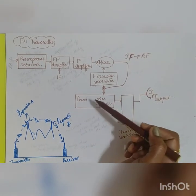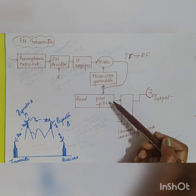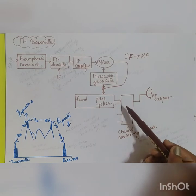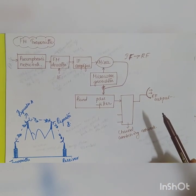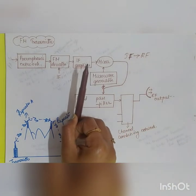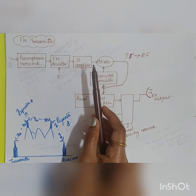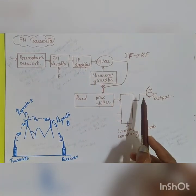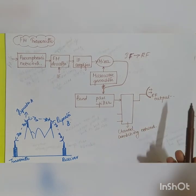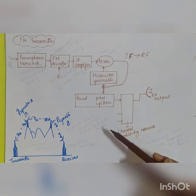The output of the mixer is given to a bandpass filter, which passes only a particular band of frequencies, effectively band-limiting the signal. The output of the bandpass filter goes to the channel combining network, which connects more than one microwave transmission to a single transmission line feeding the antenna, producing the final RF output.